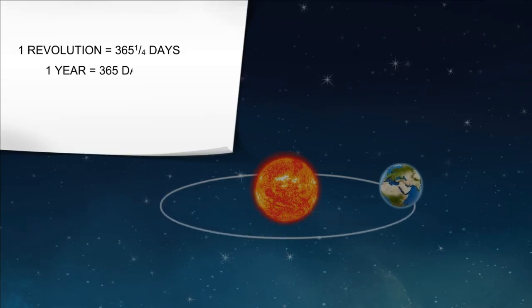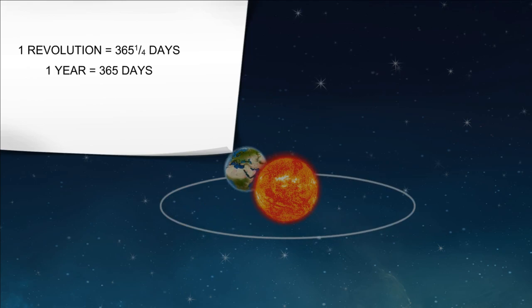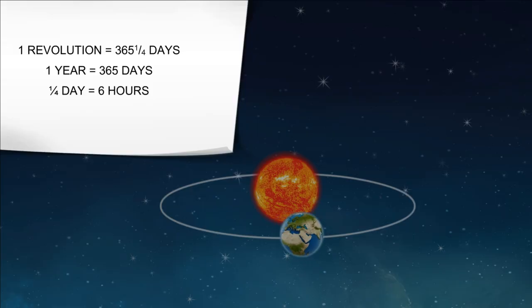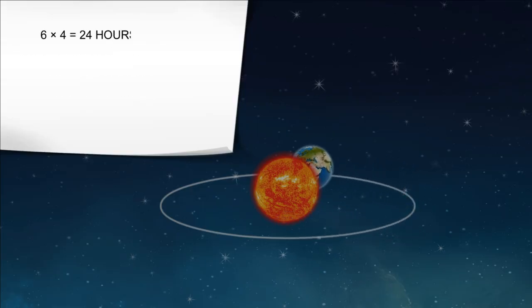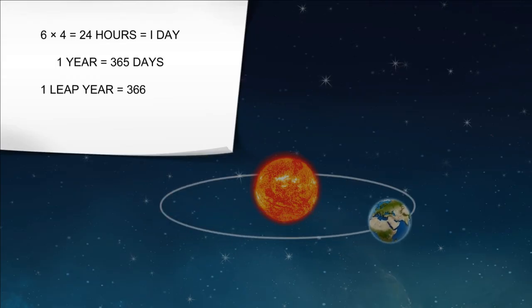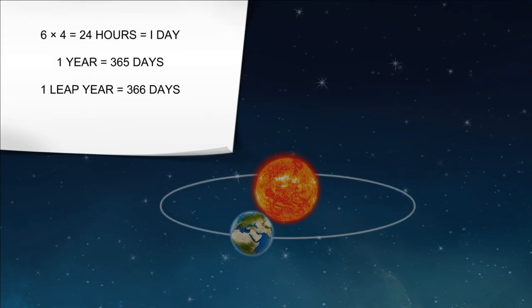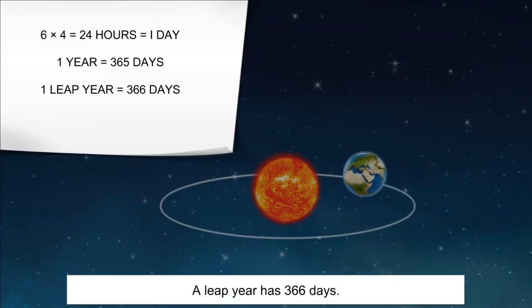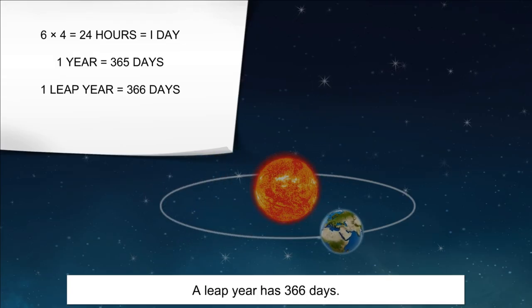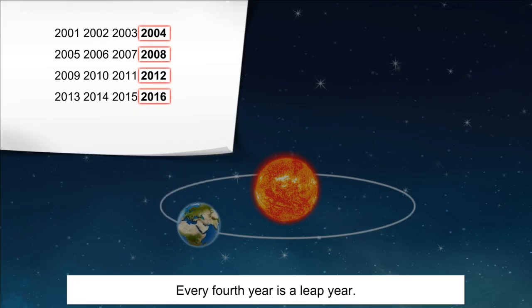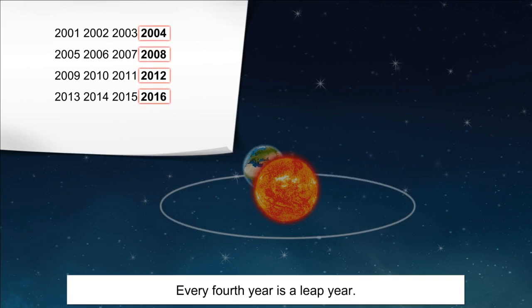However, there are 365 days in a year, and one-fourth day is equal to six hours. This balance of six hours is added up together for four years, which results in an additional day. As a result, there are 29 days in the month of February in that year, and there are 366 days instead of 365 days. It is known as a leap year. A leap year comes once every four years — a year which is evenly divisible by four is a leap year.